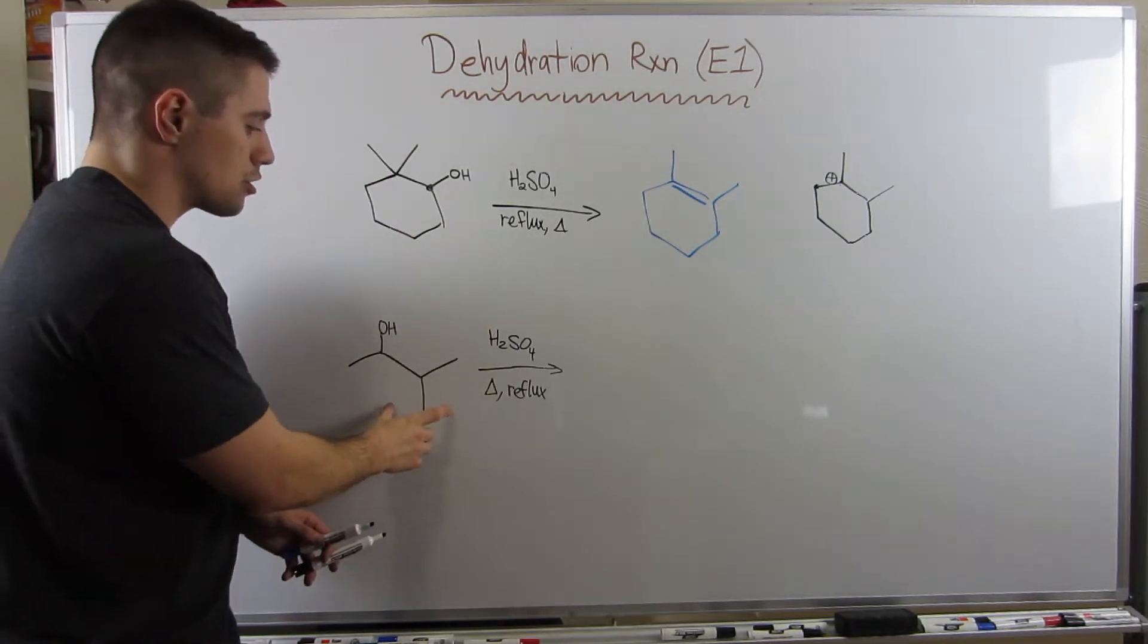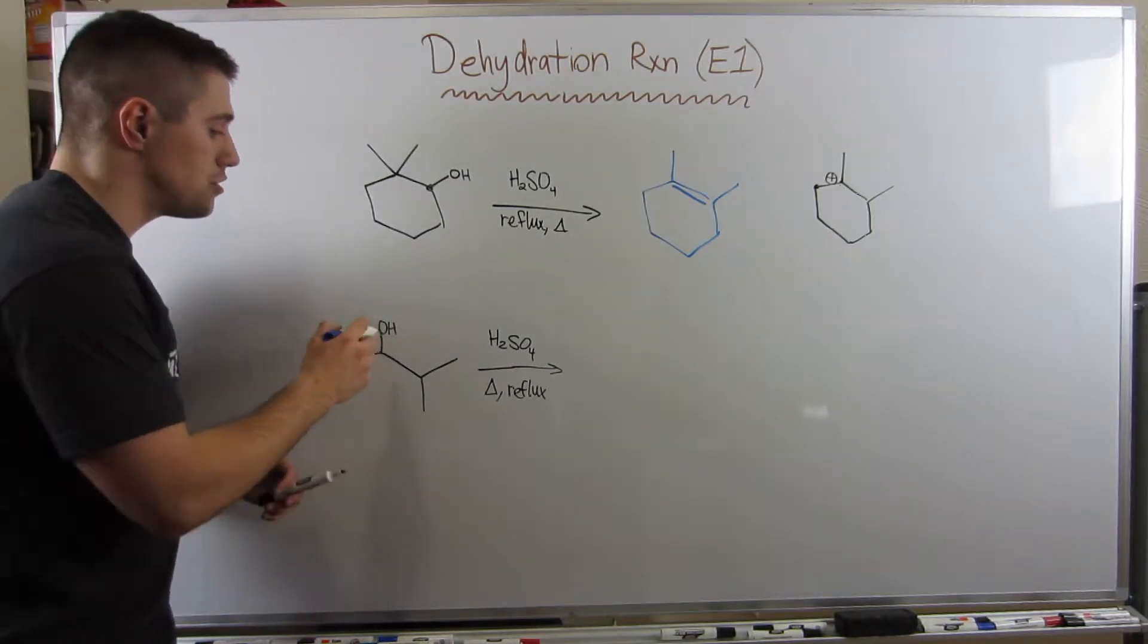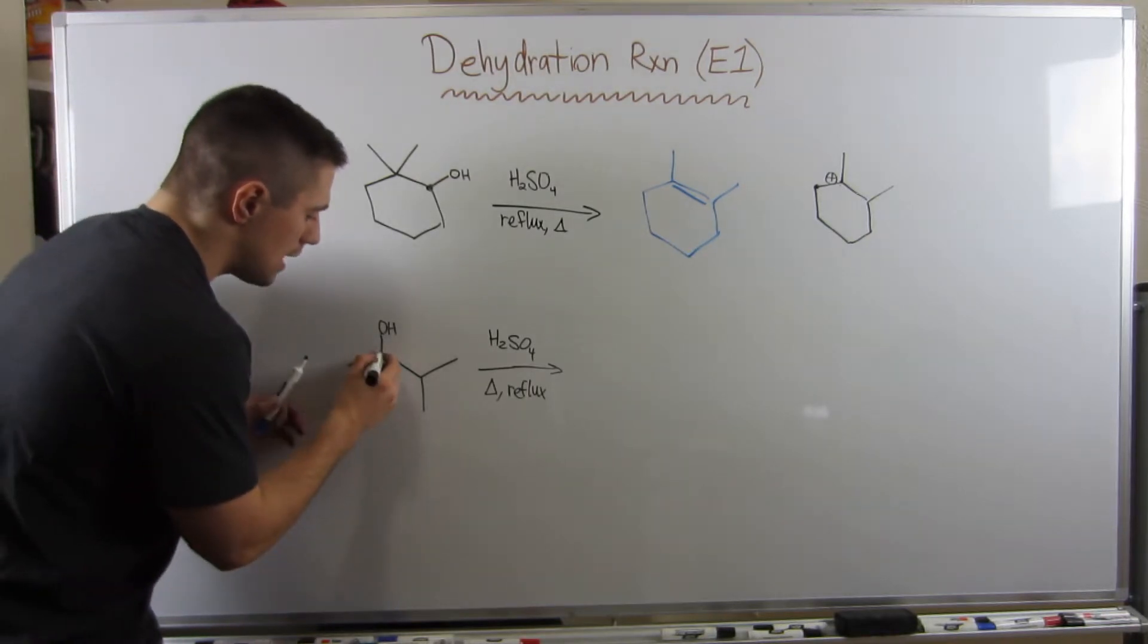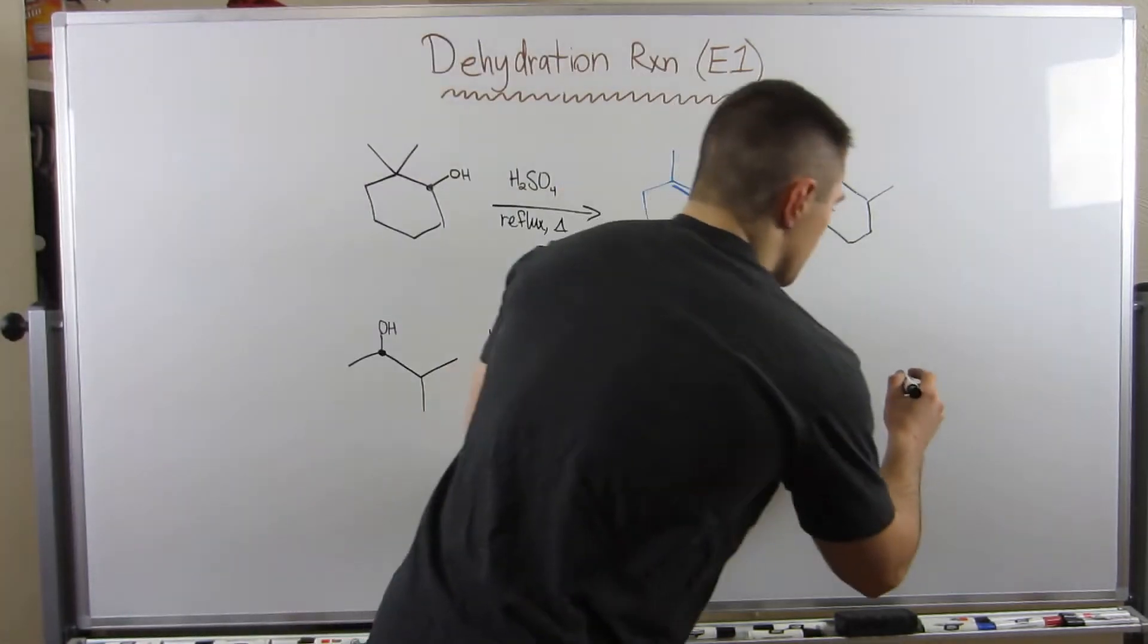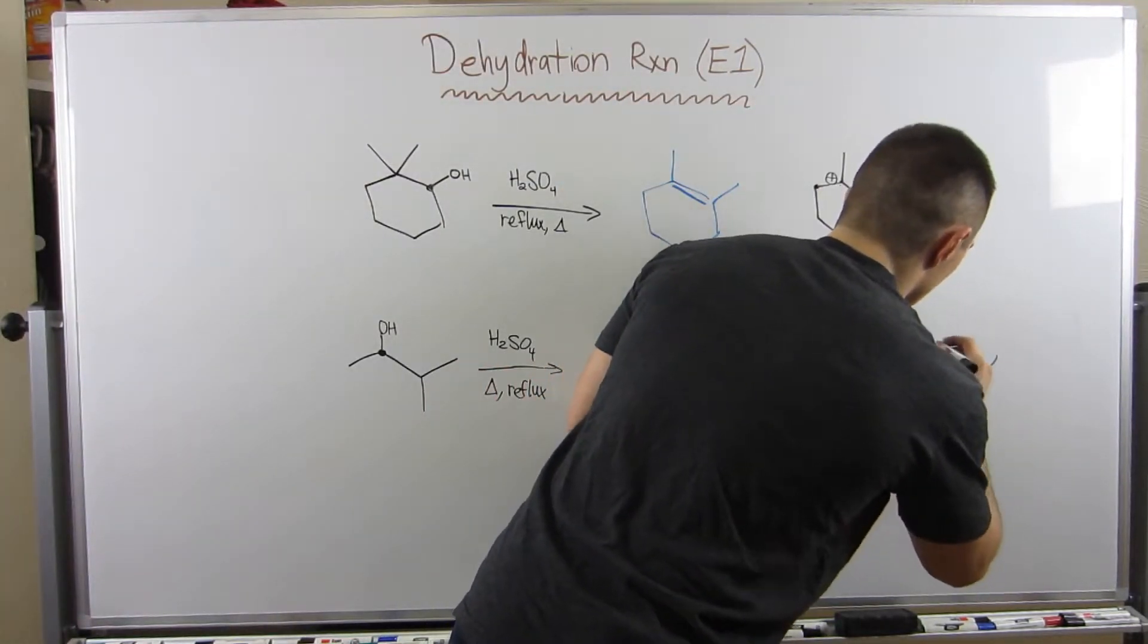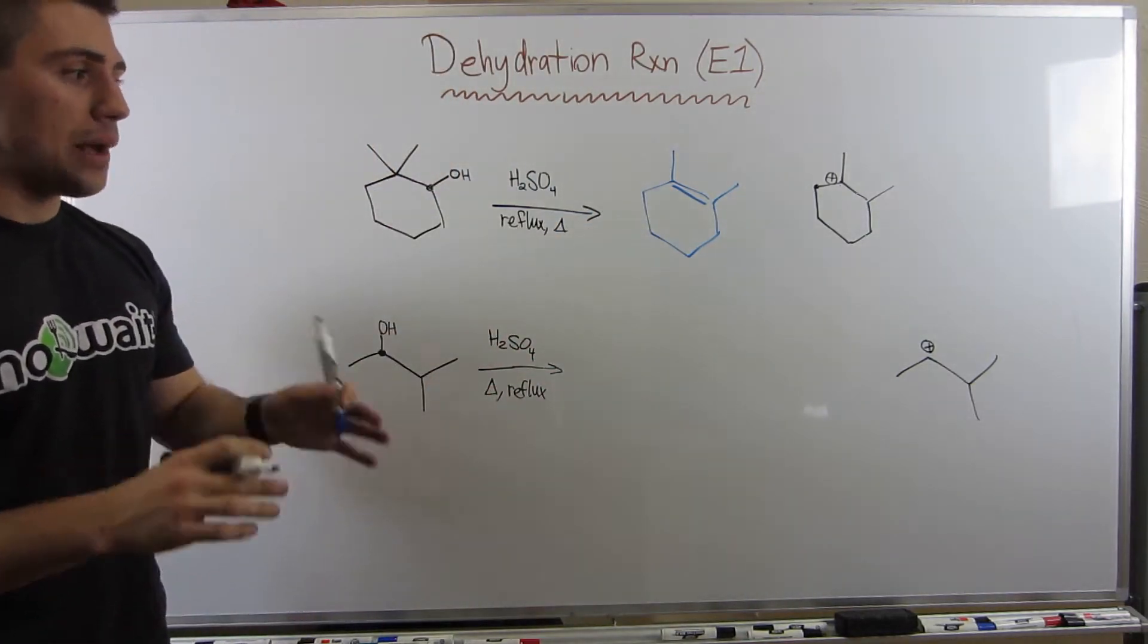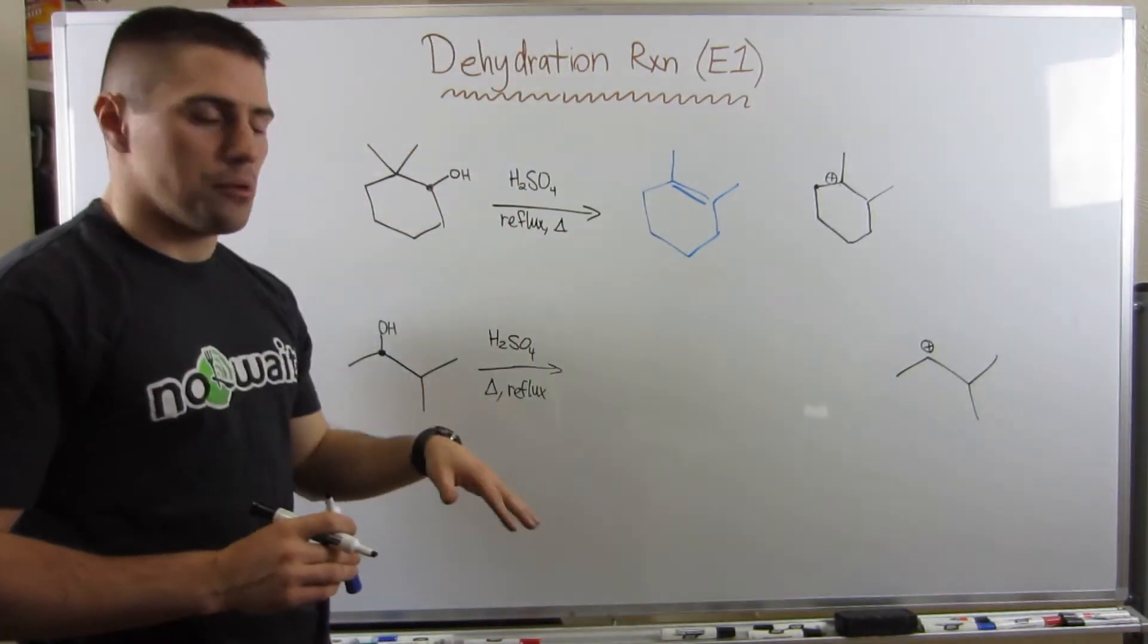So you can see that our final product would be this. Methyl group, methyl group, and the more substituted double bond would go right there. Hopefully that made sense. So the trick here was that there was a methyl shift. Now let's look at our structure down here. Again, go through the same process. We're going to protonate this OH to water, and he's going to leave, forming a carbocation at this position right here that I've dotted.